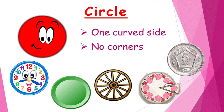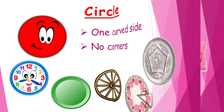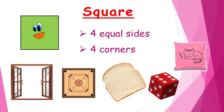Circle has one curved side and no corners. You can find the shape of a circle in many things around you, like a clock, a plate, a wheel, a cake, a coin, etc.